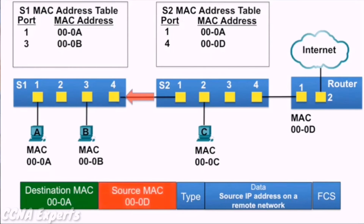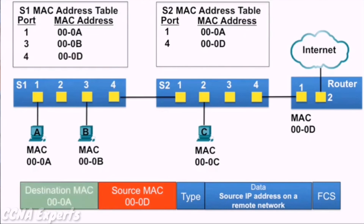S1 receives the Ethernet frame and examines the source MAC address, which is not in its MAC address table, so it adds it to its MAC address table. It then examines the destination MAC address, which is in its MAC address table, so it forwards it out port 1 towards PCA.